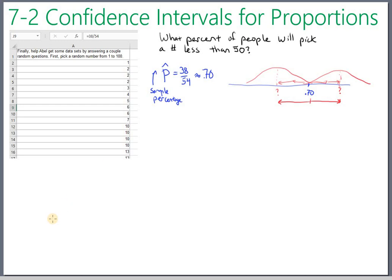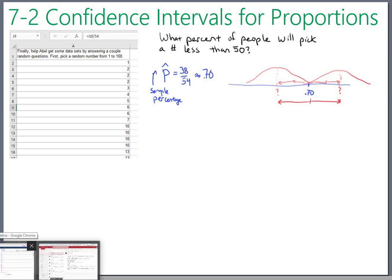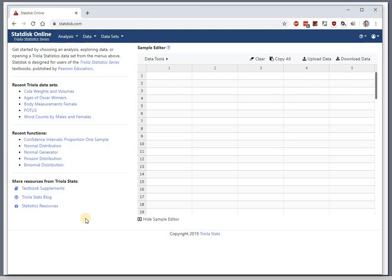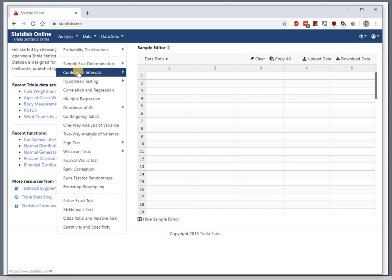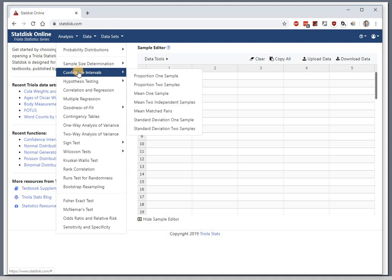Remember this 38 out of 54. That's going to be important. Then pull up StatDisk. So here's StatDisk. Under Analysis, find this option, Confidence Intervals. When you select that one, this is about a proportion. Later we're going to talk about things that we're averaging, but right now this is just a proportion. It's how many out of how many. And we're not comparing two different groups to each other. We're just doing one. So this is proportion one sample, and that's where we're going to spend all of our time in 7-2.